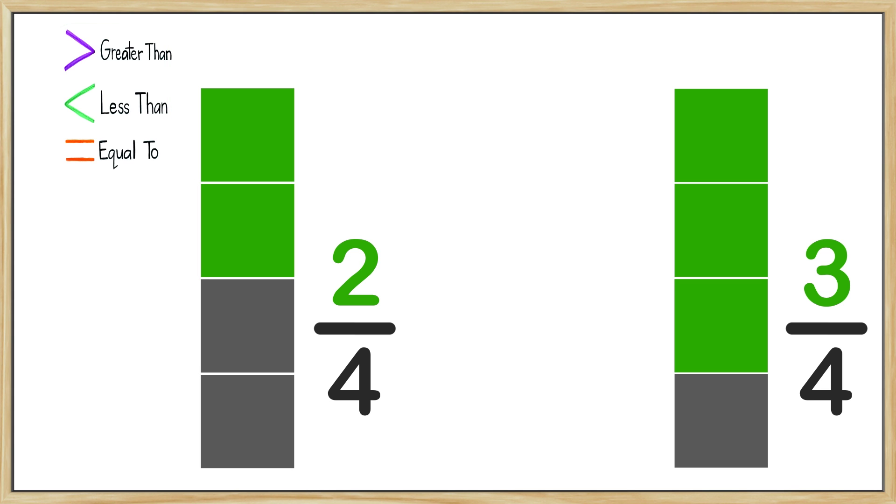Each of these rectangles is divided into four parts because the denominators are four. The left fraction has two spots that are colored green and the right fraction has three spots that are colored green. Looking at the two models, can you tell me which one is bigger or has more green?